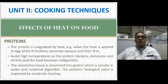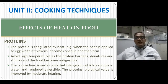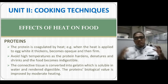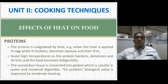Starting with proteins: when heat is applied to proteins, they coagulate. For example, when heat is applied to an egg, it becomes thick and opaque — the albumin turns white and appears to shrink slightly. This process of cooking protein is known as coagulation.